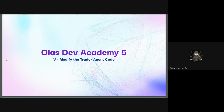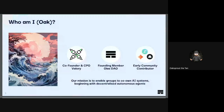I'm Oak, co-founder and CPO at Valerie and a founding member of the OLAS DAO. Previously I was an early contributor to Balancer, Ceramic, and ThoughtChain, and before crypto I worked a decade in product at Web2 startups. Our mission is really to enable groups to co-own AI agent systems, beginning with decentralized autonomous agents.